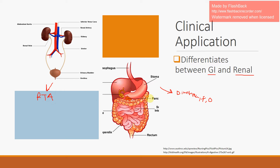In both of these cases you're going to have a preserved anion gap — not increased and not decreased. However, your bicarb is going to be low, thus a metabolic acidosis. The urine anion gap tells us UAG equals urine sodium plus urine potassium minus urine chloride. We mentioned how important the urine chloride is — we're going to be primarily focusing on that.